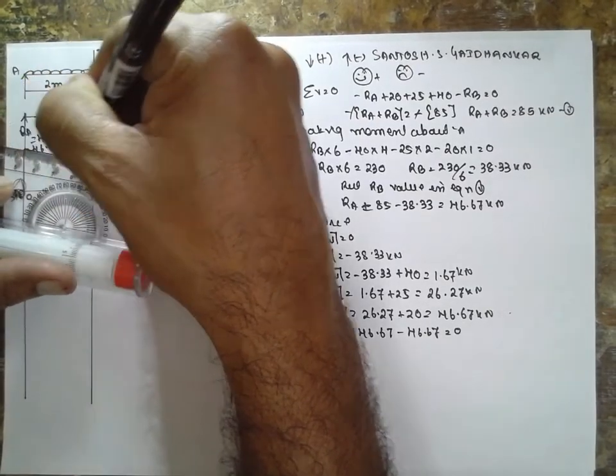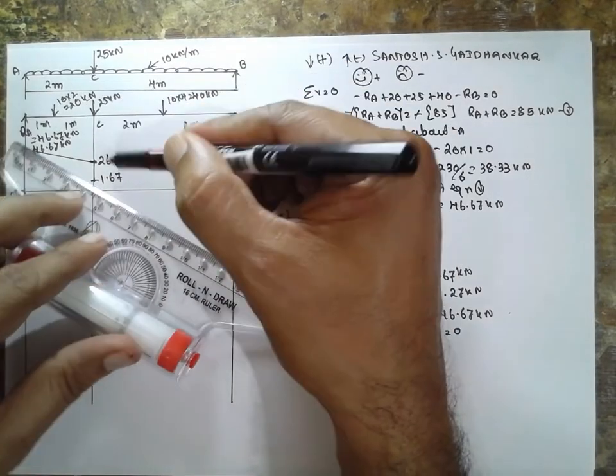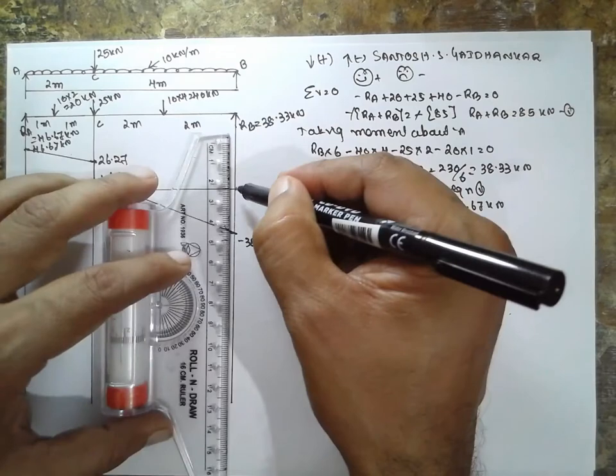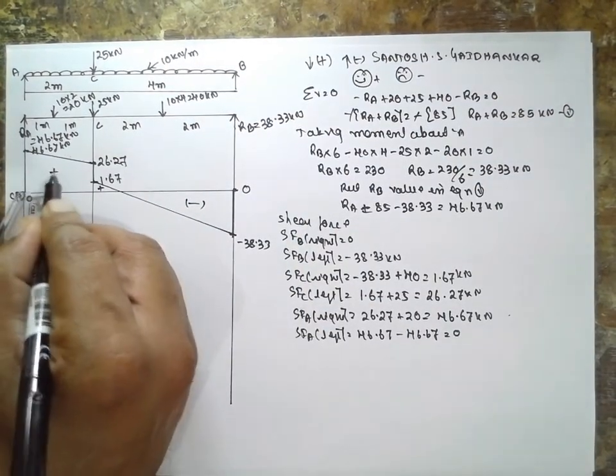Inclined line downward, inclined line because of UDL, upward, negative, positive, positive.